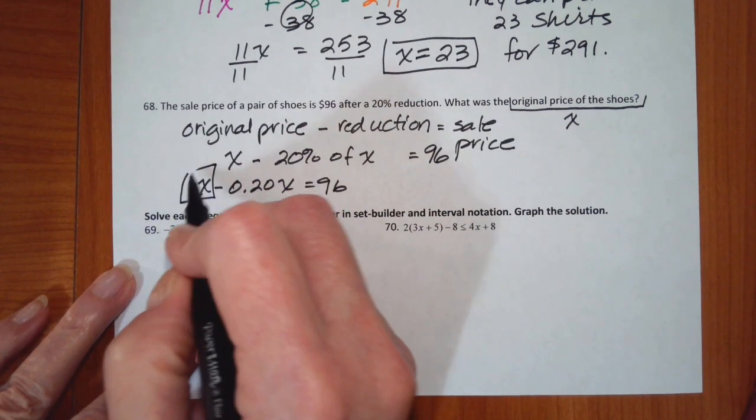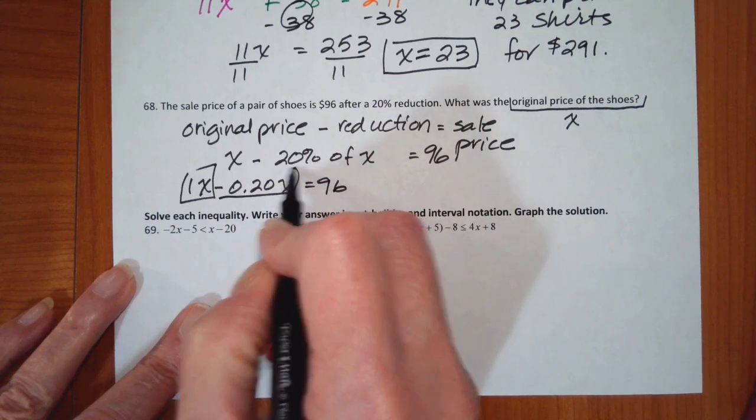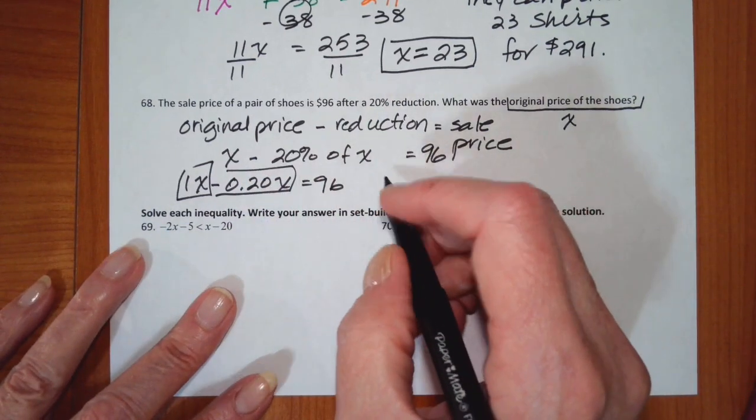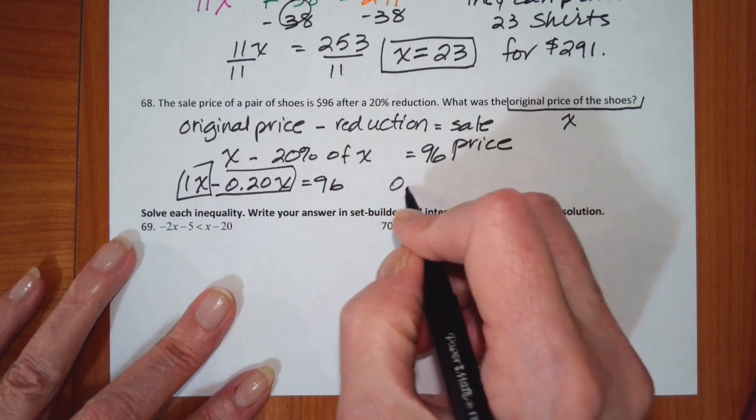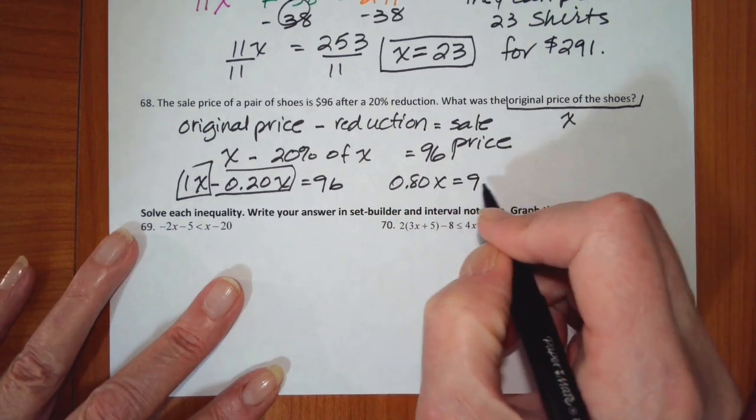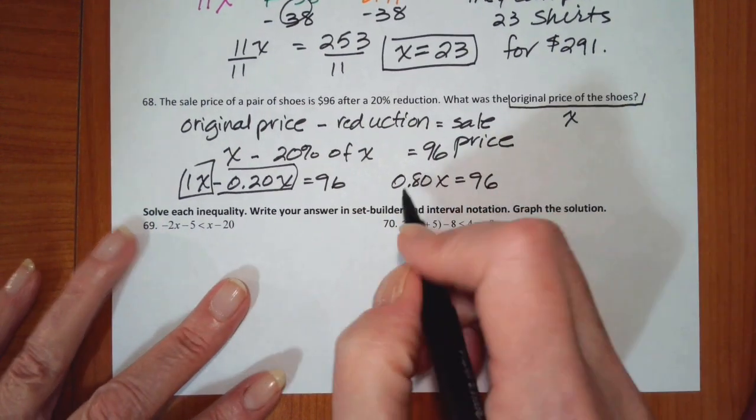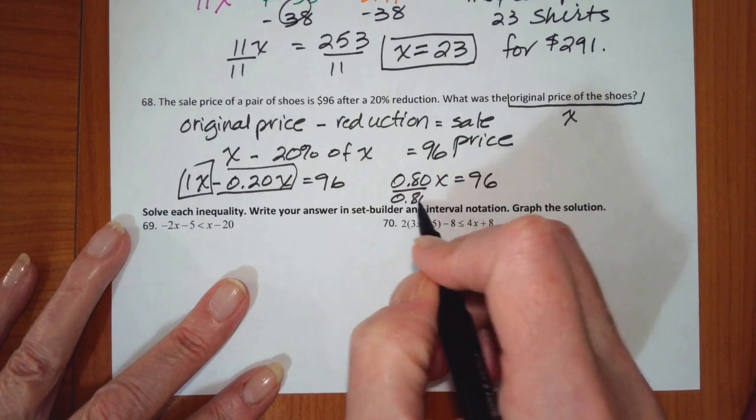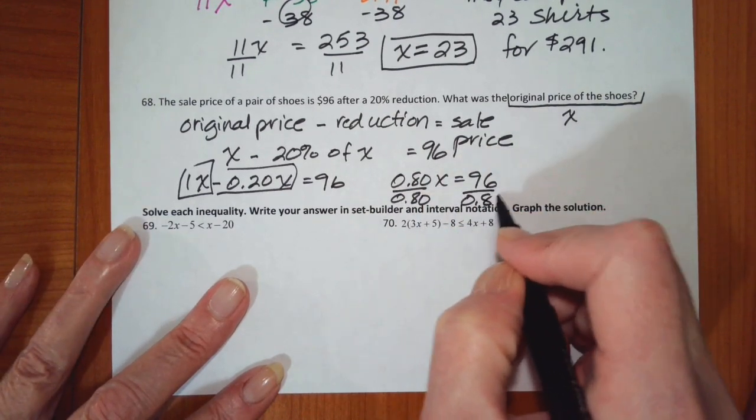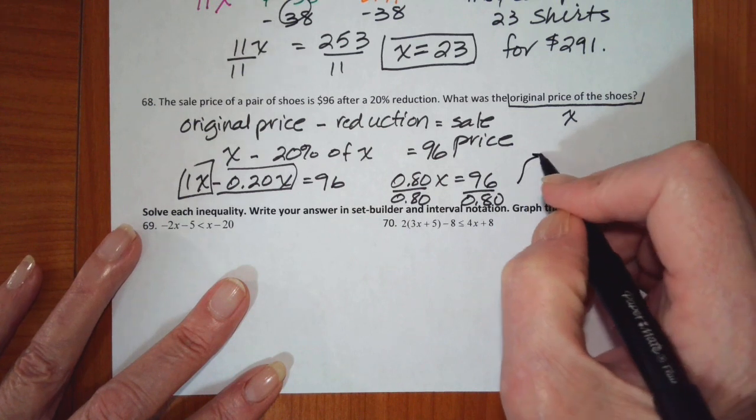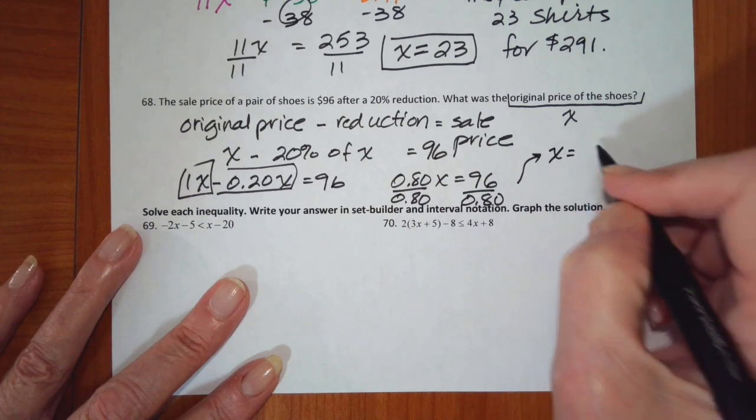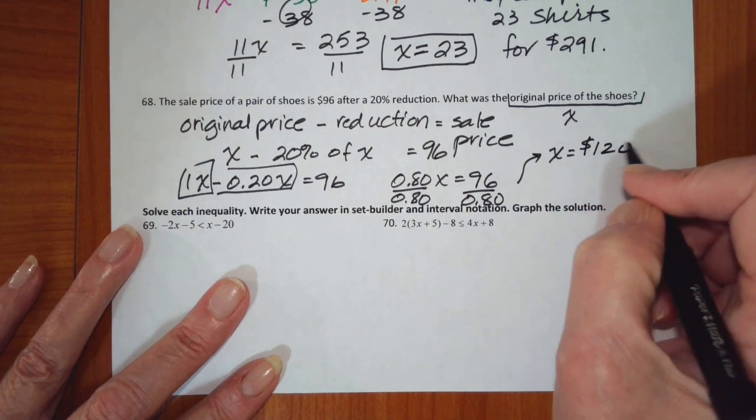These are like terms. I have 1x minus 0.20x and that gives us 0.80x is equal to 96. Divide by 0.80 and I get that x is 120.